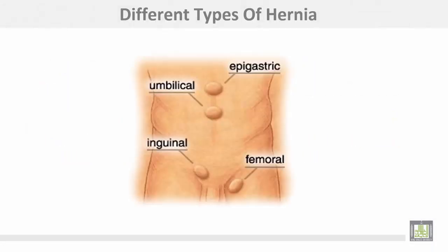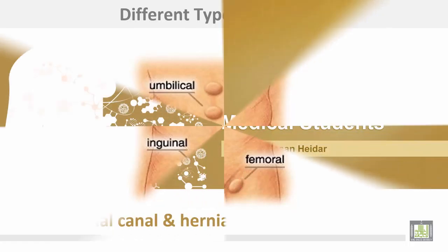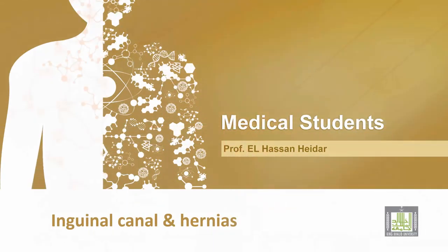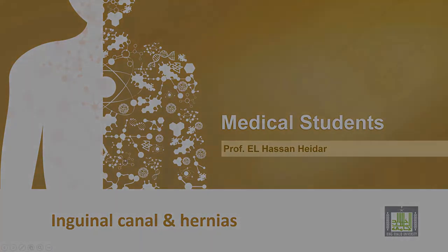This diagram shows different types of hernia: epigastric hernia, umbilical hernia, inguinal hernia above the inguinal ligament, and femoral hernia below the inguinal ligament.